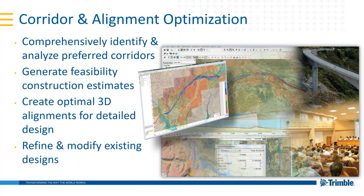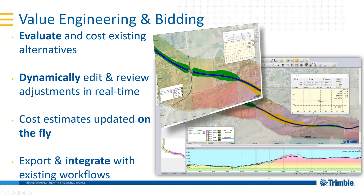One of the early applications of Quantum was corridor and alignment optimization — creating three-dimensional alignments over very large areas. The same methodology applies to haul roads in rugged terrain, areas with an earthworks imbalance, where you need to modify an existing design, or where you may only have a 2D conceptual alignment and a cost per mile. The system uses much more intelligence to help determine the alignment: you can take that 2D conceptual alignment, generate a 3D alignment, apply all the geometry, and optimize it simultaneously.